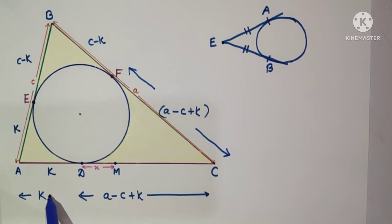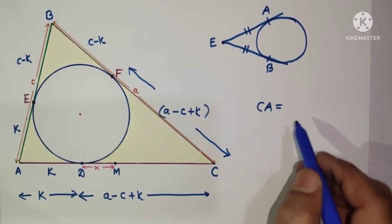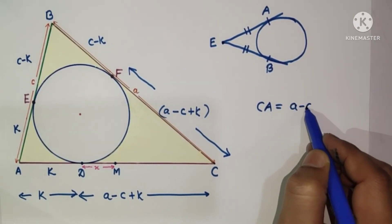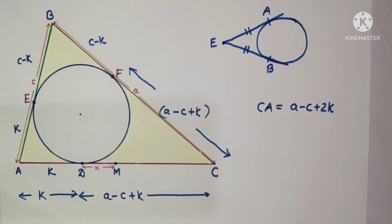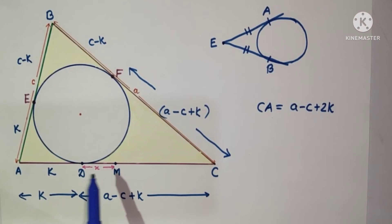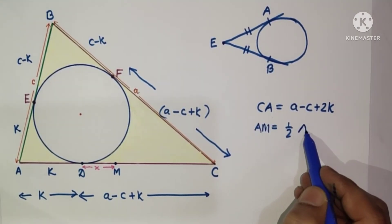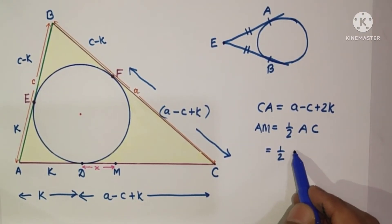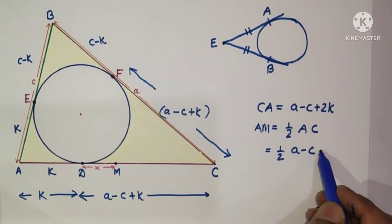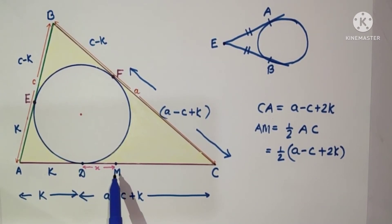We have AD equal to K and CD equal to a minus c plus K, so the full length CA equals CD plus AD, which is (a minus c plus K) plus K, giving CA equals a minus c plus 2K. Since M is the midpoint of AC, AM equals half of AC, so AM equals half of (a minus c plus 2K).